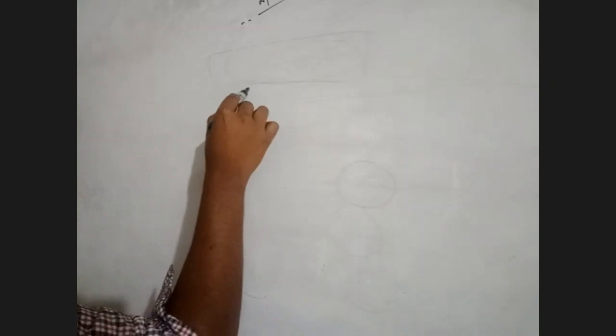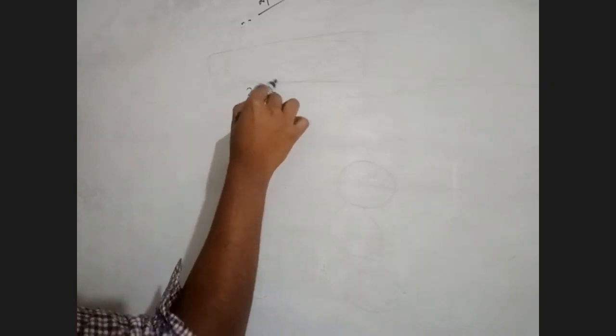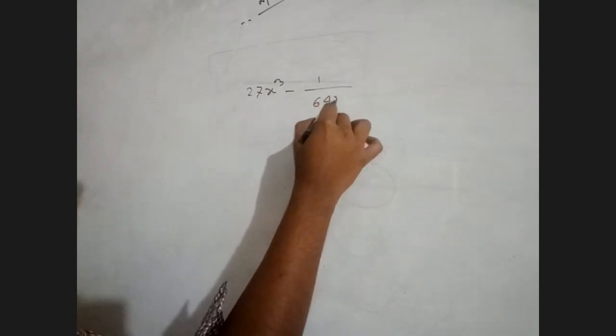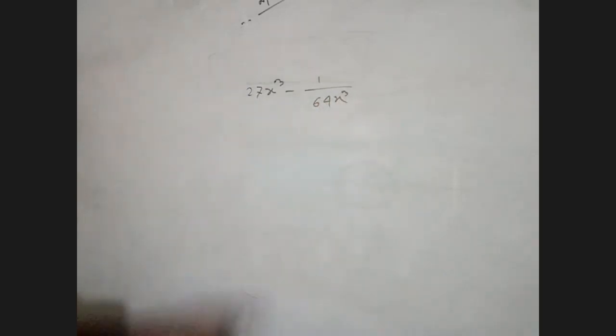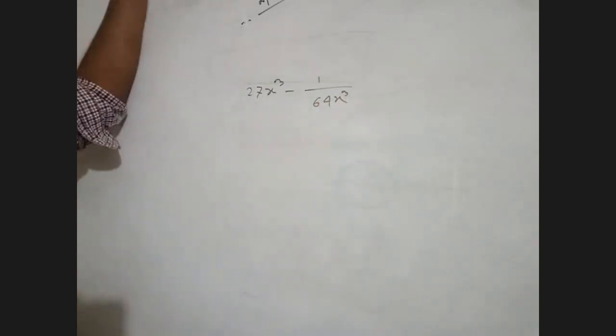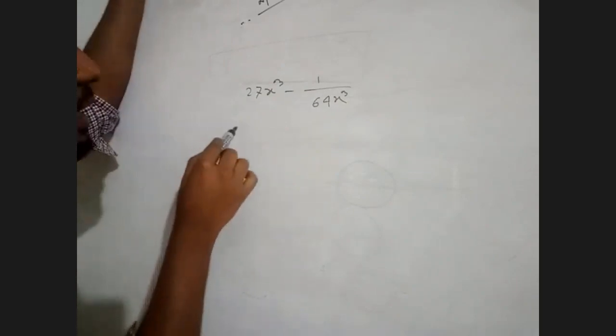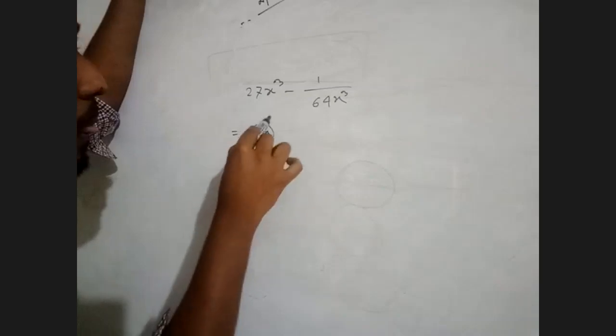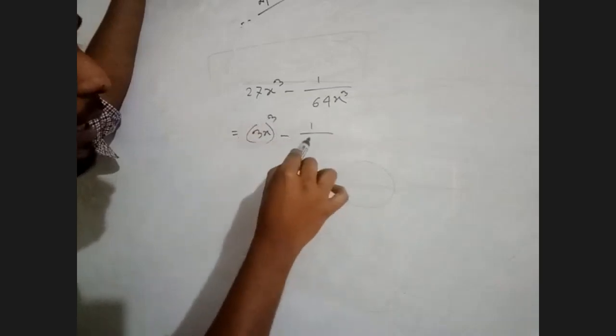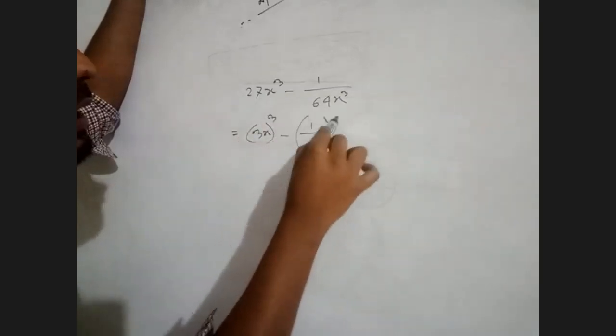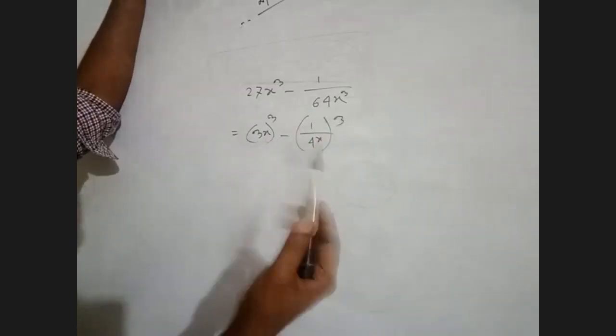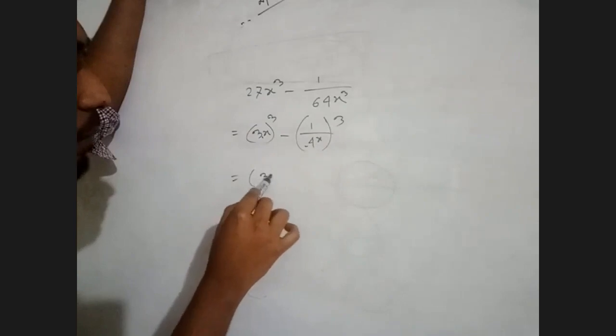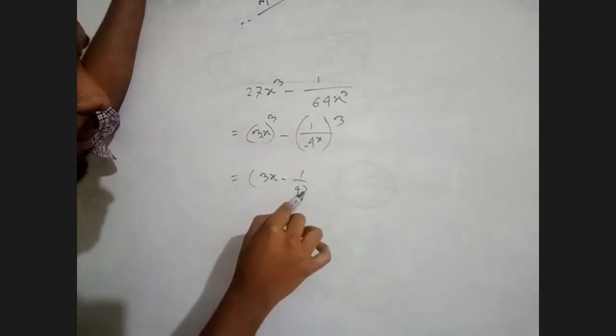27 x cube minus one divided by 64 x cube. So you have 3x overall 3 minus one divided by 4x. Using the formula a minus b, a minus b.